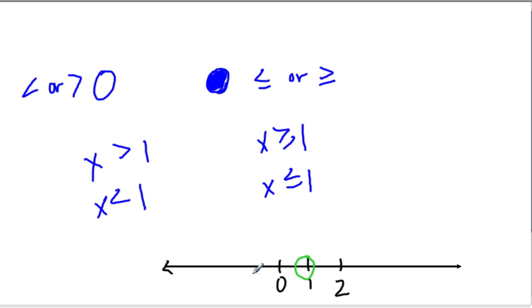If we have x is greater than or equal to 1, we fill the dot in. It's a closed circle. That indicates that 1 could be an answer. And for greater than or equal to 1, we go this way. And for less than or equal to 1, we go this way.